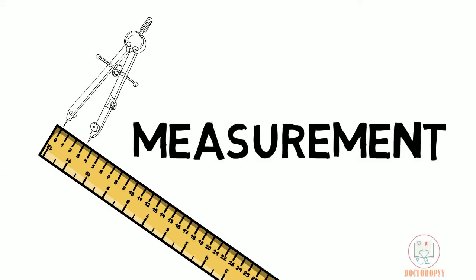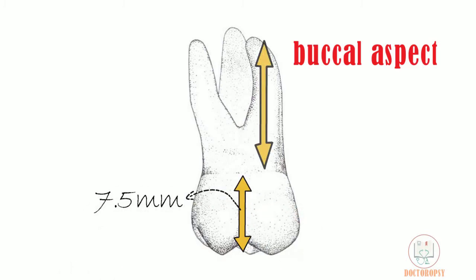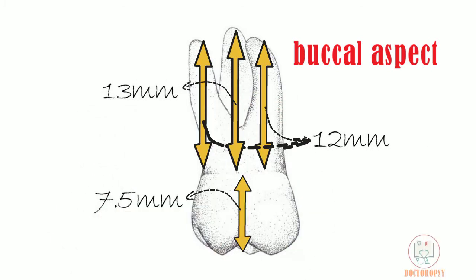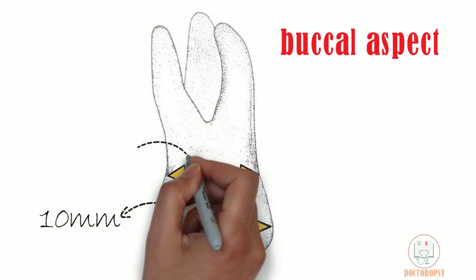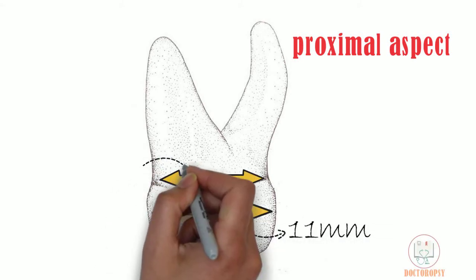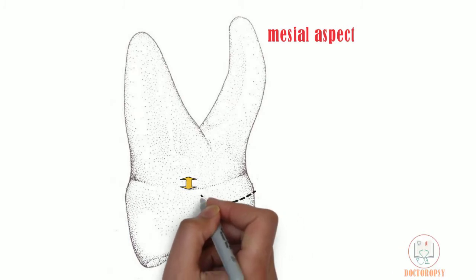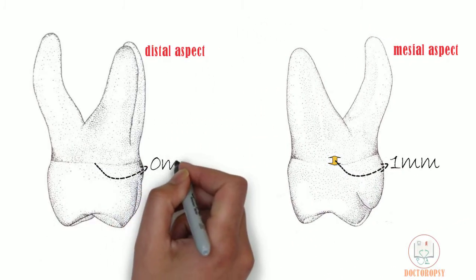Coming to measurements, the cervico-occlusal length of the crown is 7.5 mm. The length of both the buccal roots is 12 mm and the lingual root is 13 mm. Mesiodistal diameter of the crown is 10 mm and its cervix is 8 mm. The buccolingual diameter of the crown is 11 mm and its cervix is 10 mm. The cervical line has a curvature of 1 mm on the mesial side and on the distal side it is flat.